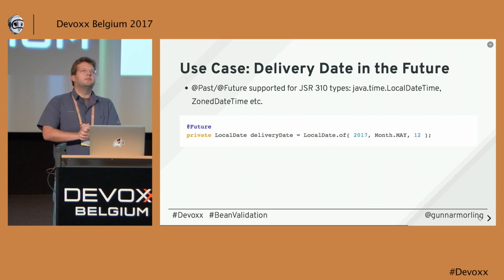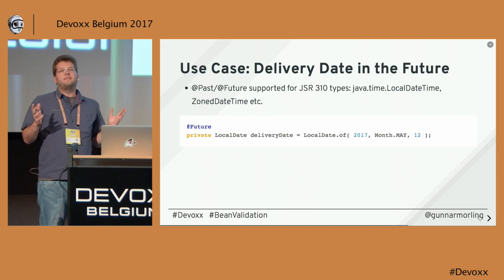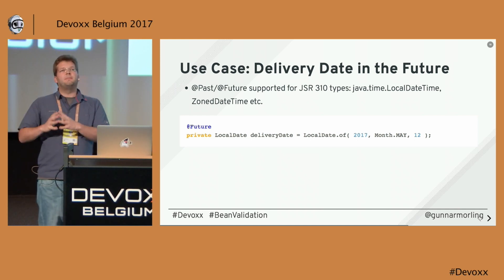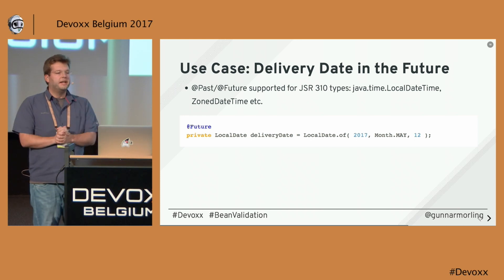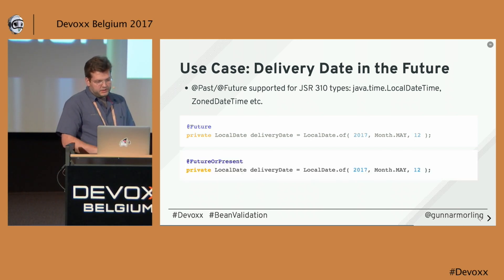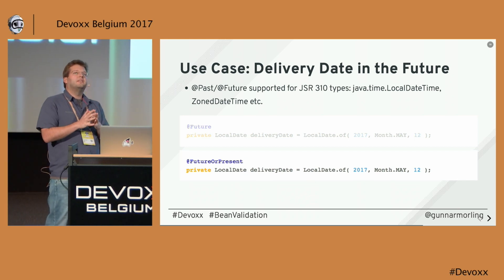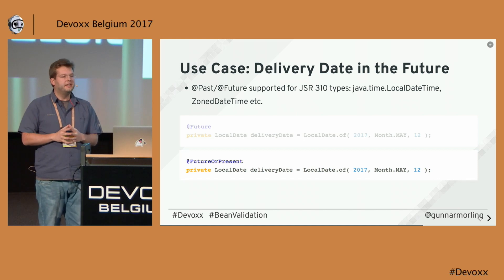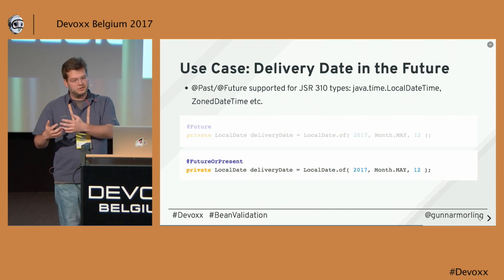The next use case is in an order management application where you'd like to ensure the delivery date is in the future. If you've worked with Bean Validation before, you know the @Past and @Future constraints — they're still there, but now they're also supported for all the new date and time APIs added in Java 8. JSR 310 defines many useful types such as LocalDateTime, ZonedDateTime, and so on, and those constraints are now supported for all these types. We also added two new constraints: @FutureOrPresent and @PastOrPresent. These are useful when validating a type that represents a range rather than a specific instant, like an entire day or month. @FutureOrPresent means the delivery date is valid if it's today or in the future.